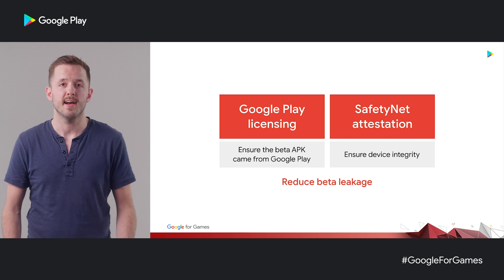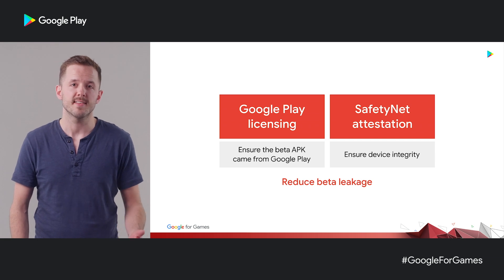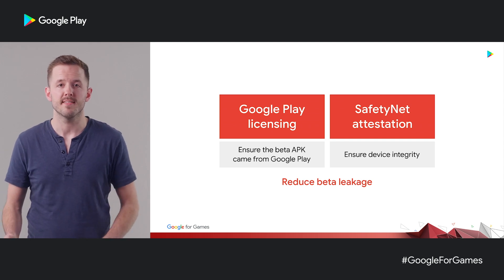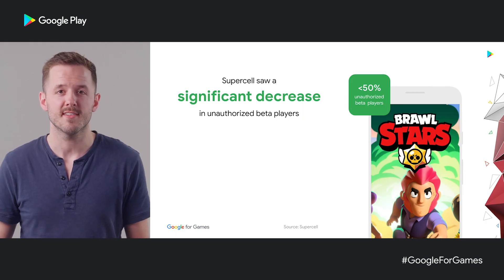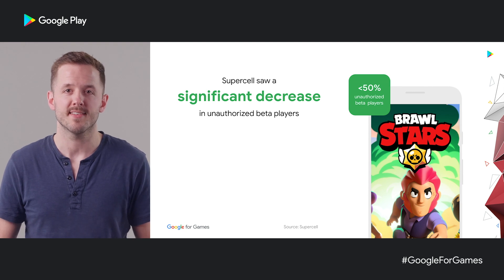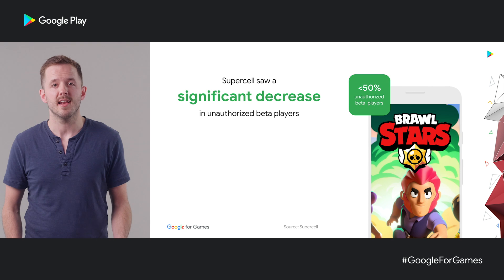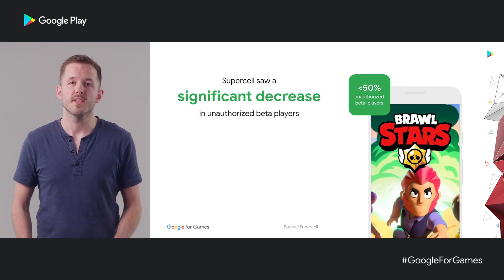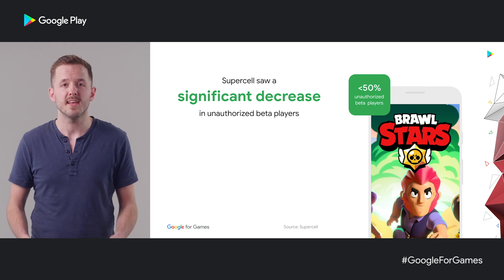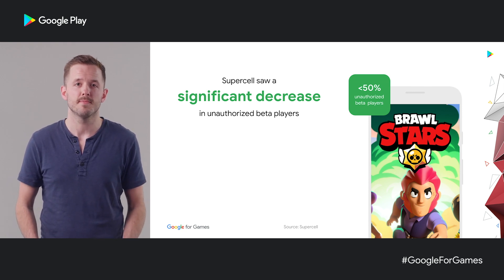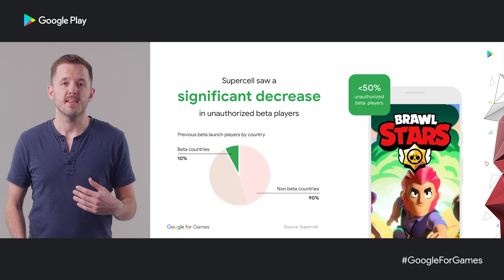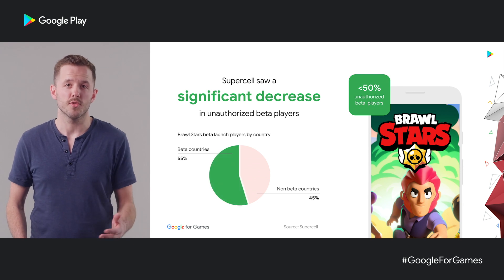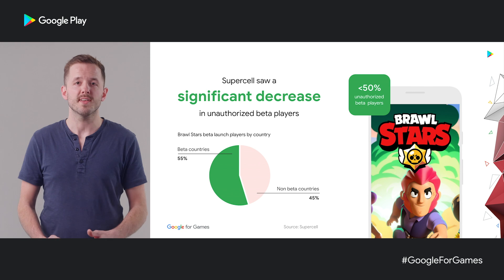This is where Google Play licensing and SafetyNet attestation come in. Licensing lets you know the user is in one of your beta countries and they got the binary from Google Play. And SafetyNet lets you know you can trust the device. Supercell wanted to control the distribution of their Brawl Stars APK during beta testing and ensure that the beta didn't leak beyond a certain set of countries. With a combination of licensing and SafetyNet, they saw a significant reduction in the number of sessions from leaked builds. Compared to a previous beta launch which had 90% unauthorized beta players, they saw under 50% unauthorized beta players. That's an amazing result.